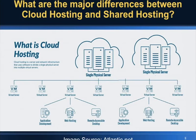This picture is from Atlantic.net. It shows the backend or typical setup of cloud hosting services. As per them, cloud hosting is a server and network infrastructure that uses software to divide a single physical server into multiple virtual servers — and that is exactly how it works. You can see two physical servers in the backend divided into multiple virtual servers, each given to a particular user. When you subscribe to cloud hosting from any cloud provider, you are given a virtual machine — a virtual server which is part of the original physical server in the backend.